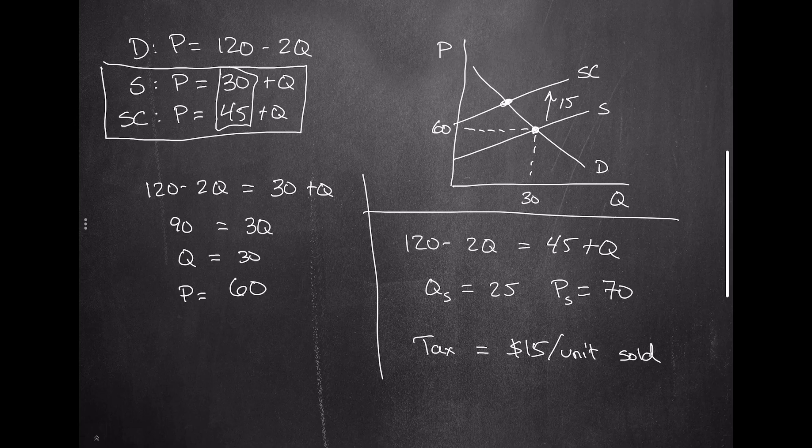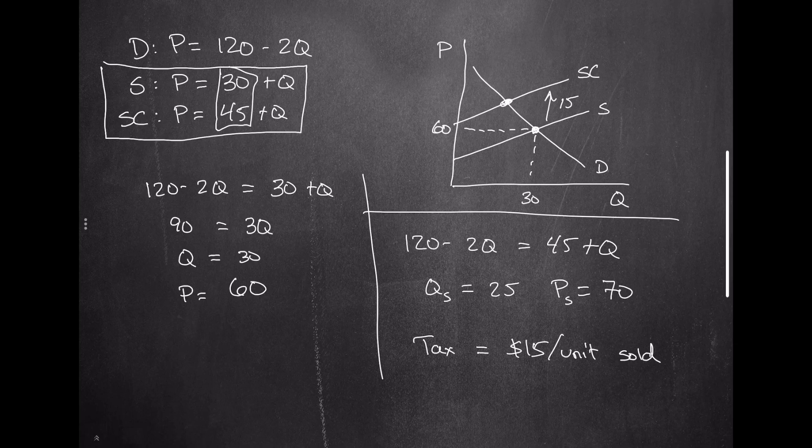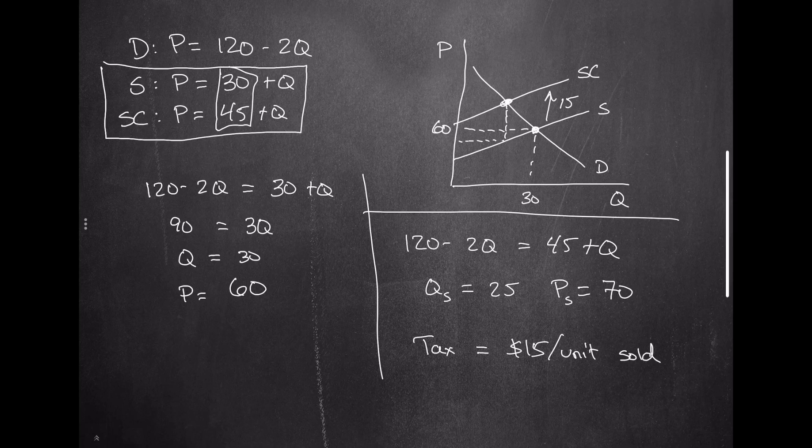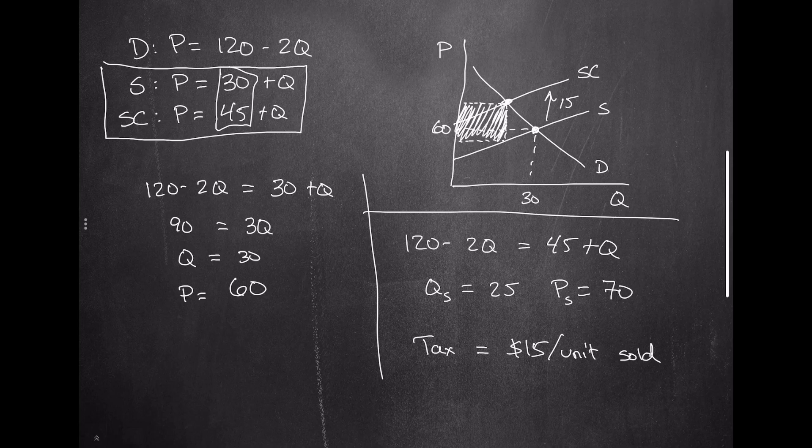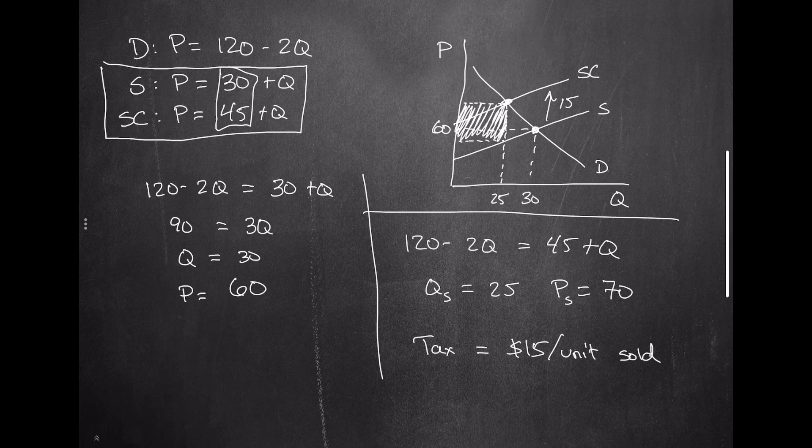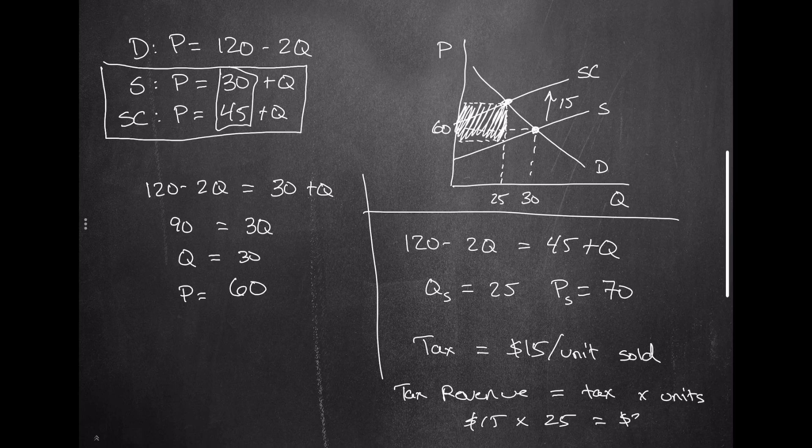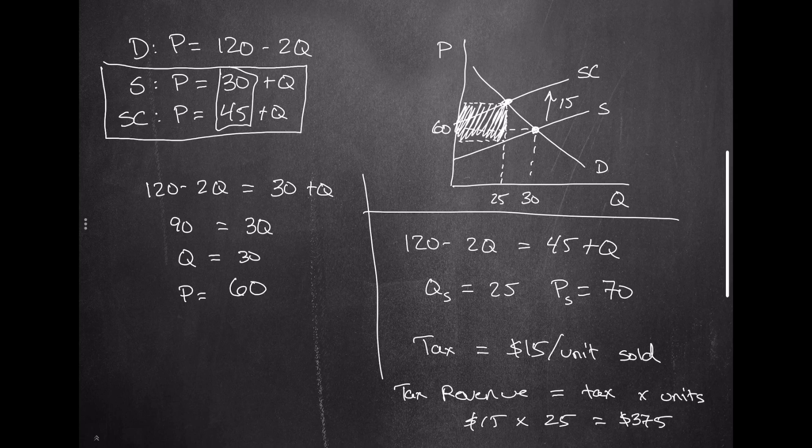I should also point out that when you have a per unit tax, it's actually remarkably easy to figure out where the tax revenue is going to be. The tax revenue is just going to be this box right here. The tax revenue equals the tax times the units. That would be $15 times 25 units, which leading mathematicians would say is $375. So that's probably the easiest solution to these types of Pigouvian tax problems.